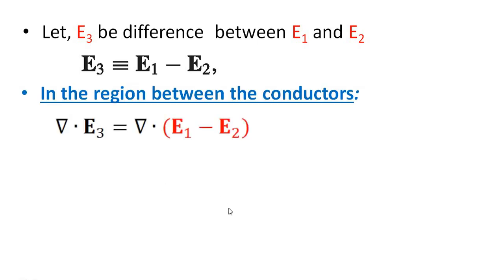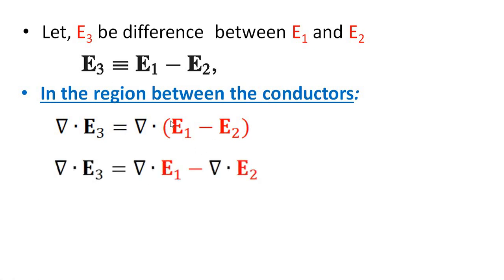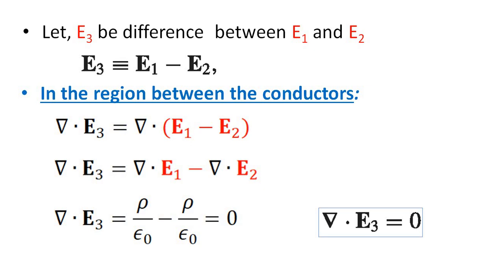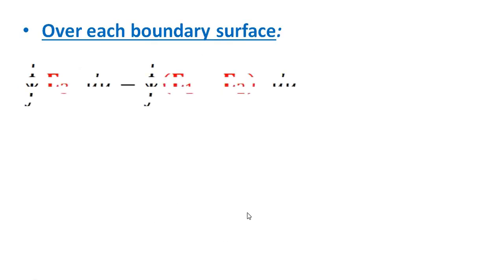Then, in the region between the conductors, del dot E3 equal to del dot of (E1 minus E2), that is del dot E1 minus del dot E2, which will be equal to 0. That is, del dot E3 equal to 0. For each boundary surface, the closed surface integral of E3 dot da equals the closed surface integral of (E1 minus E2) dot da.